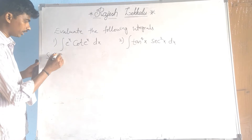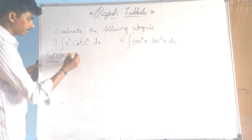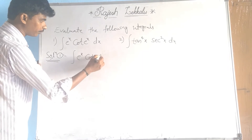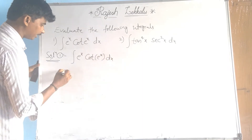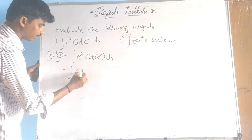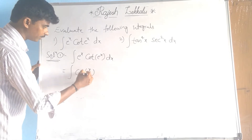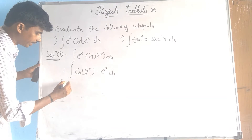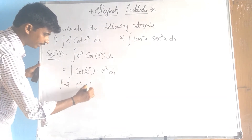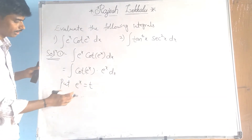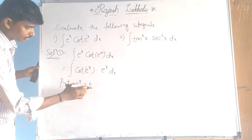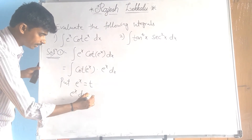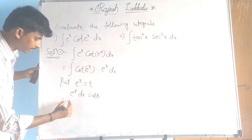Solution number 1: integral of eˣ·cot(eˣ) dx, which equals integral of cot(eˣ)·eˣ dx. Now put eˣ equal to t — substitution method. Derivative of eˣ gives eˣ dx equal to dt. Now substituting here.